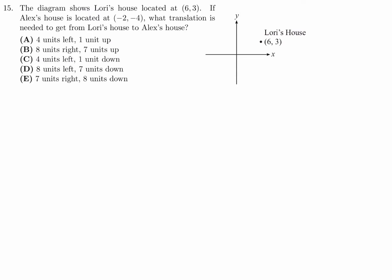In the diagram, it shows Lori's house located at (6,3). If Alex's house is located at (-2,-4), what translation is needed to get from Lori's house to Alex's house? So (-2,-4) are approximately here, let's say. So we've got to go from here to here, but not in the diagonal. We've got to go down and right, obviously. Well, to go down, that's the y-coordinate. We're going from 3 to -4, so we've obviously gone down by 7.